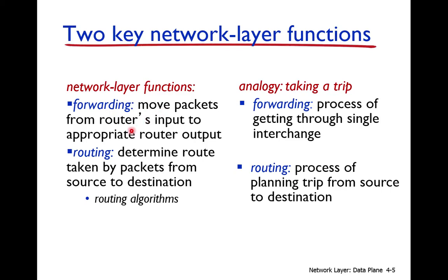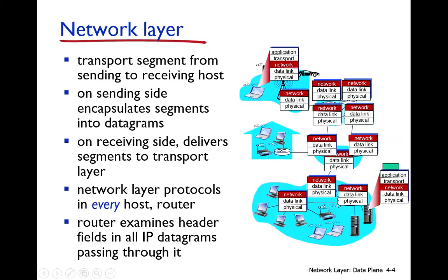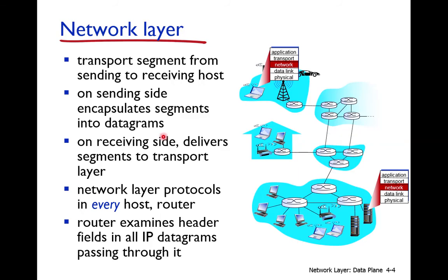Forwarding means moving the packet from a router's input port to the appropriate router output port. For example, when a packet moves from the sending host to the first router, then to the next router, and so on until it reaches the destination machine — this movement from one router to another is called forwarding.